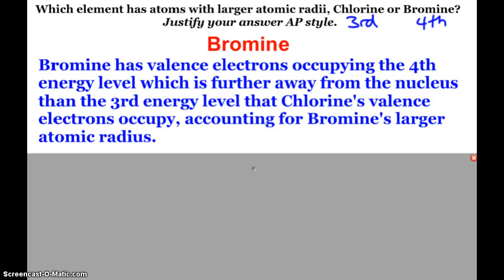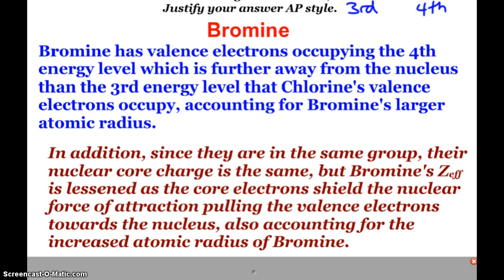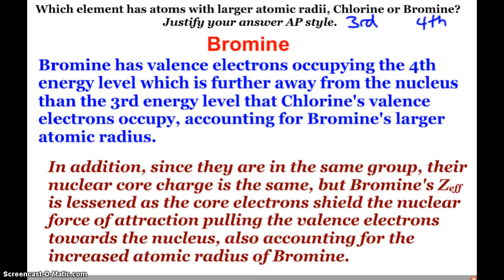We could see here the shielding that I was talking about. In addition, since they are in the same group, the nuclear core charge is the same, but bromine's Zeff is lessened as the core electrons shield the nuclear force of attraction that's pulling the electrons towards the nucleus, and that also accounts for the increased atomic radius of bromine. Don't worry about this per se. If they bring up a question and specifically ask you about a shielding effect, then yes, you're going to want to discuss that. But when they are simply asking you to tell them which atoms have larger radii, then definitely I would just stick with the whole fourth versus third energy level.